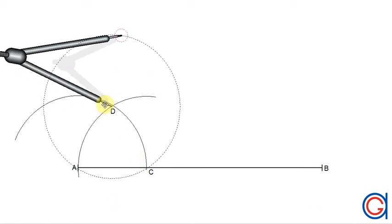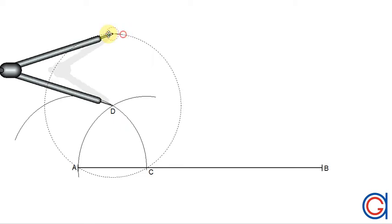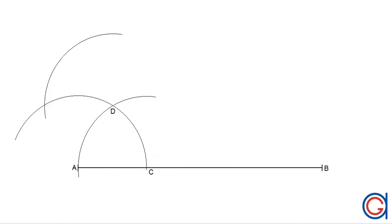And now, with the same radius, we set our compass on this new point D and we scribe an arc to the left, as can be seen here, cutting our first arc at a new intersecting point which we call E.